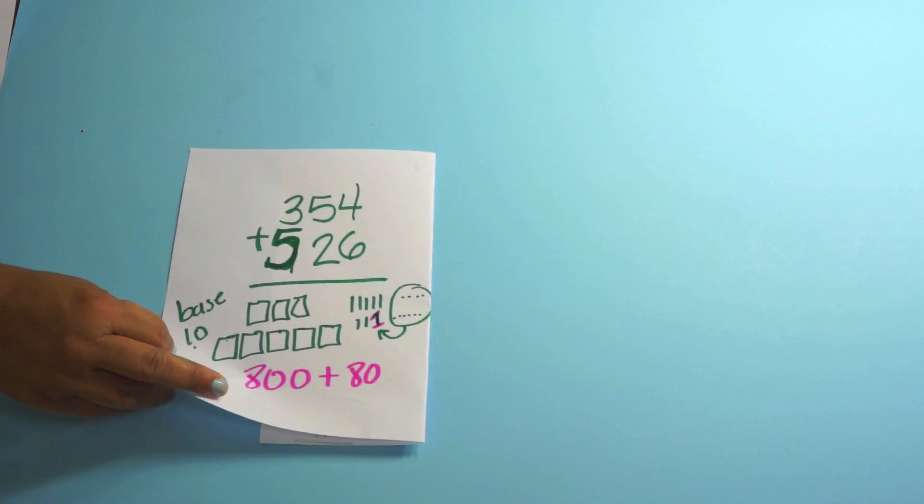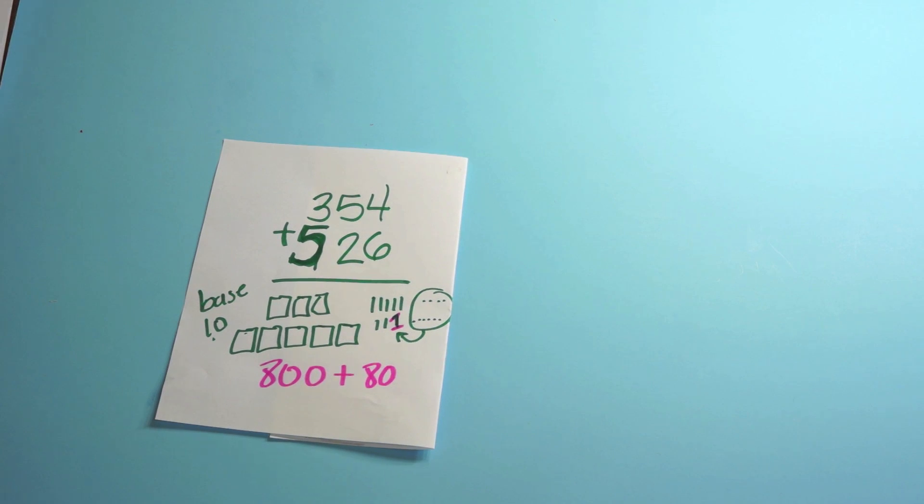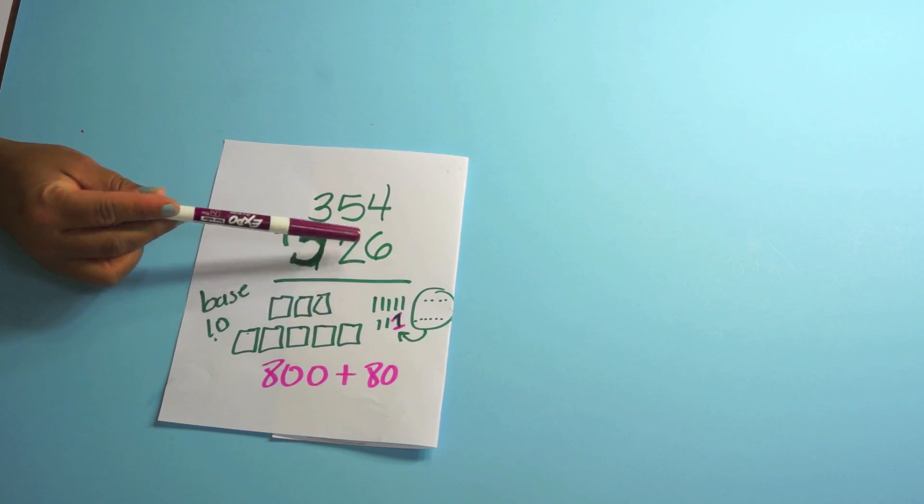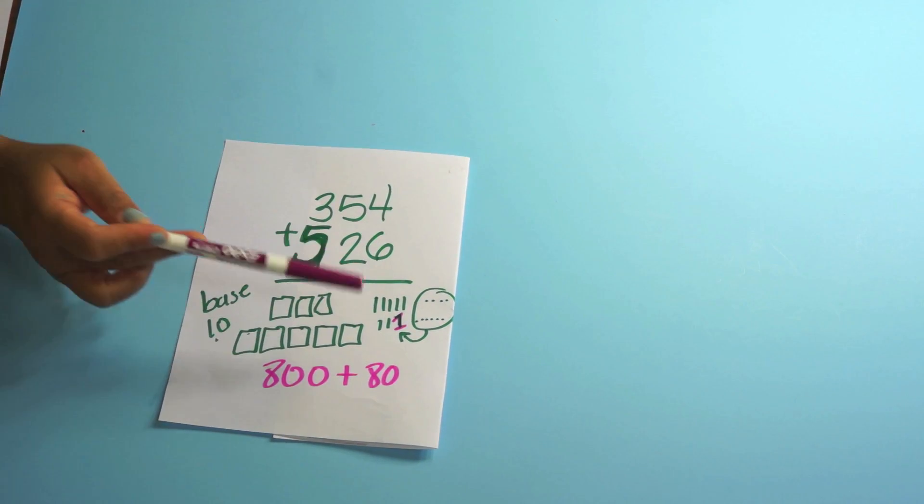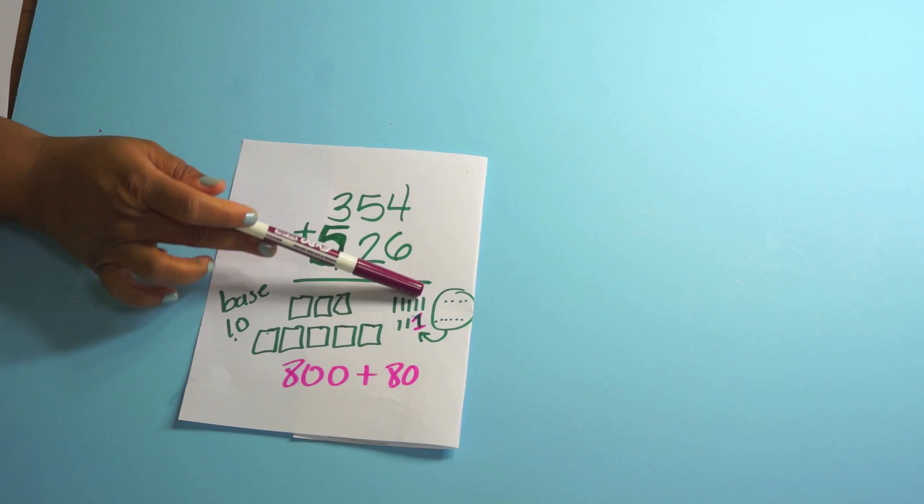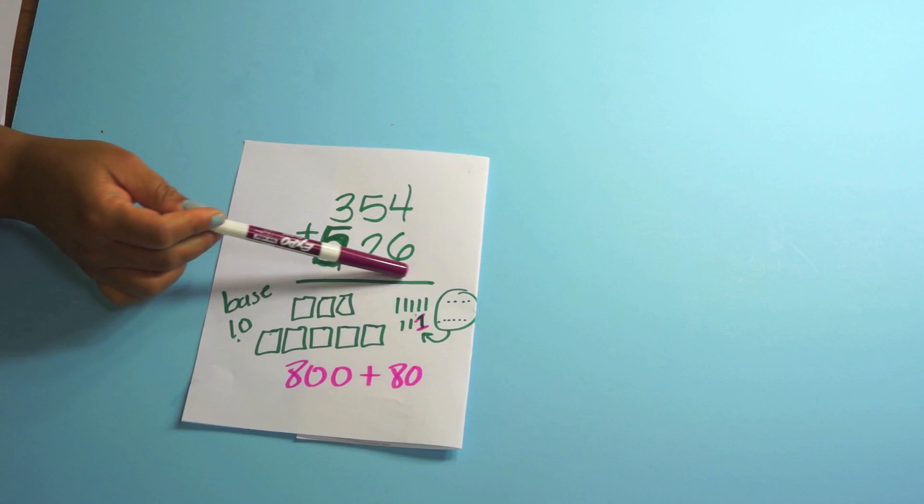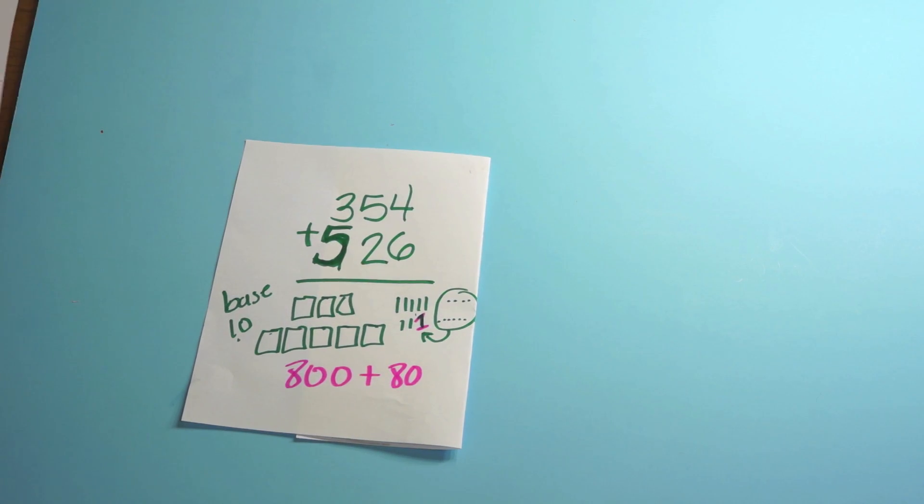Next critical area: kids will have fluency adding and subtracting within a thousand based on strategies based in place value. And so let's take this one 354 plus 526 and solve it using the base 10 pictures.